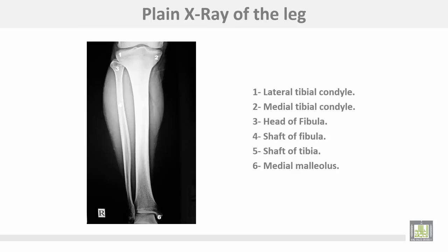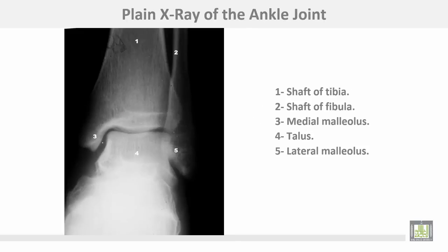This plain X-ray of the leg shows the lateral tibial condyle, the medial tibial condyle, the head of the fibula, the shaft of the fibula, and the shaft of the tibia, and the medial malleolus.